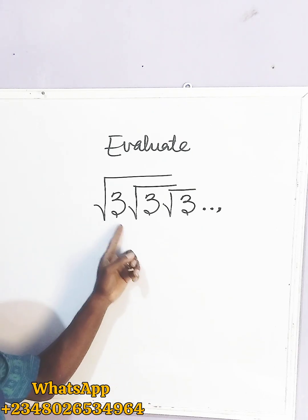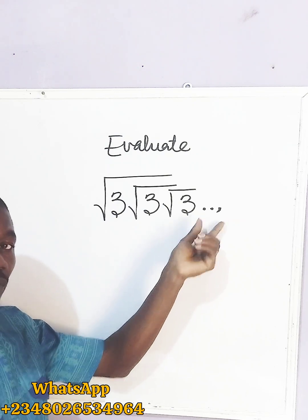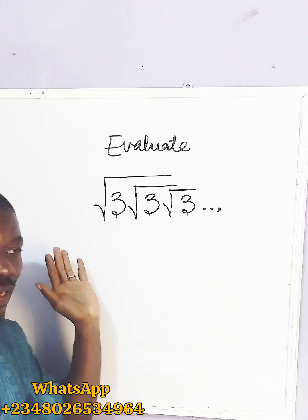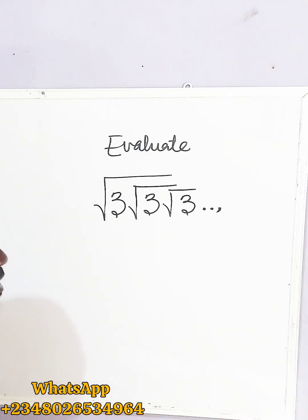Okay, now this is the square root of 3, the square root of 3, the square root of 3. Now, this dot means continuously like that, so this pattern continues.